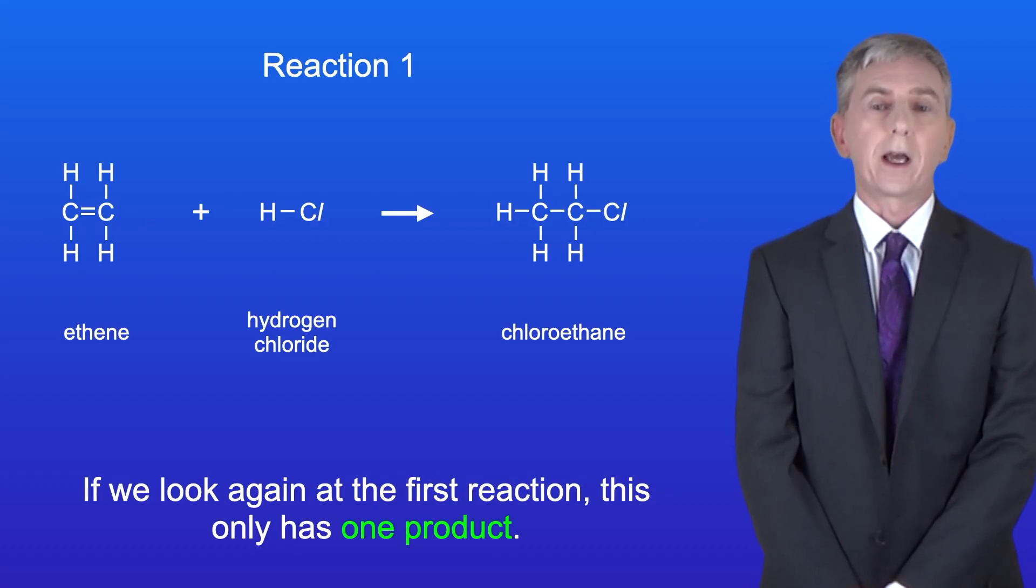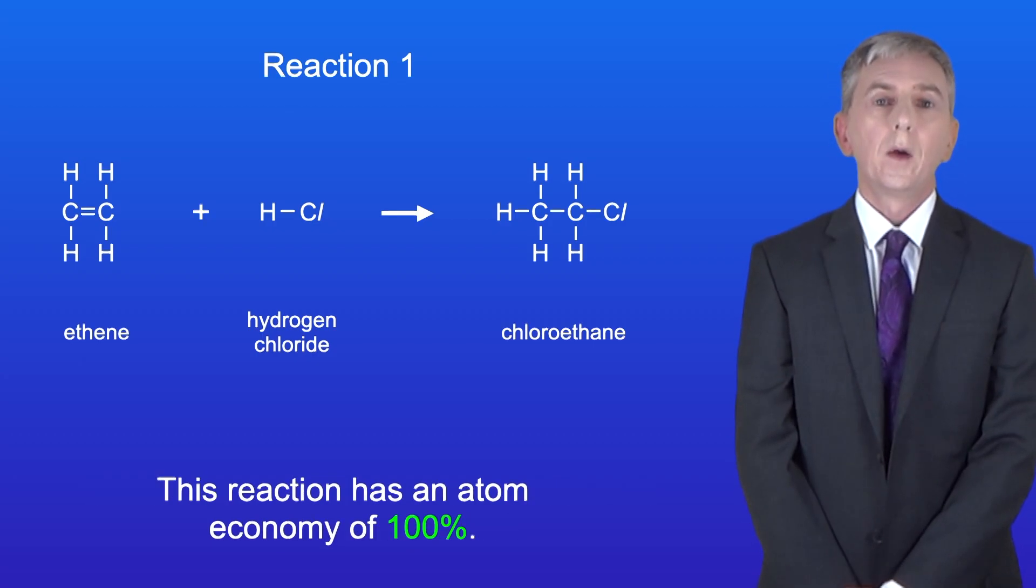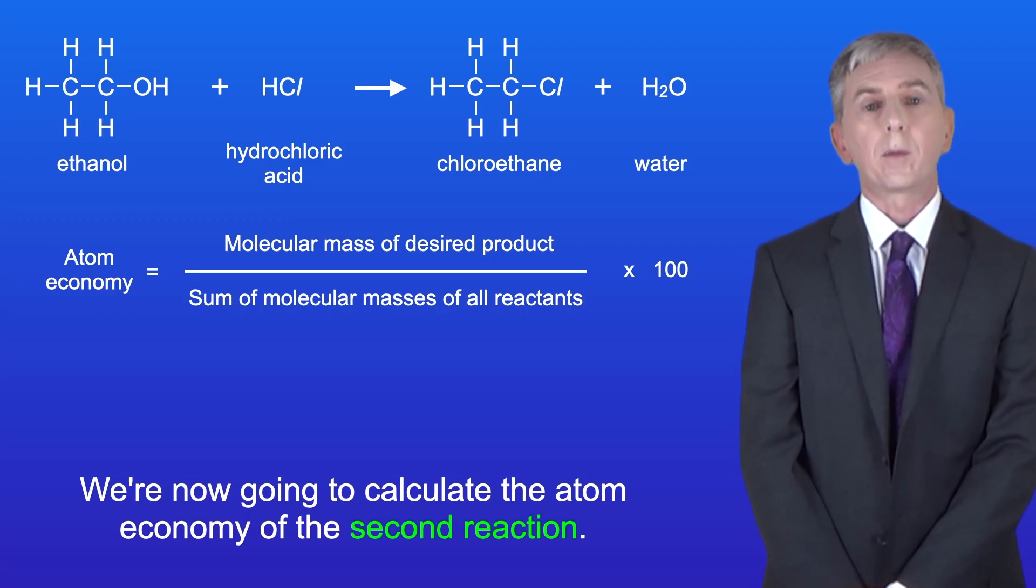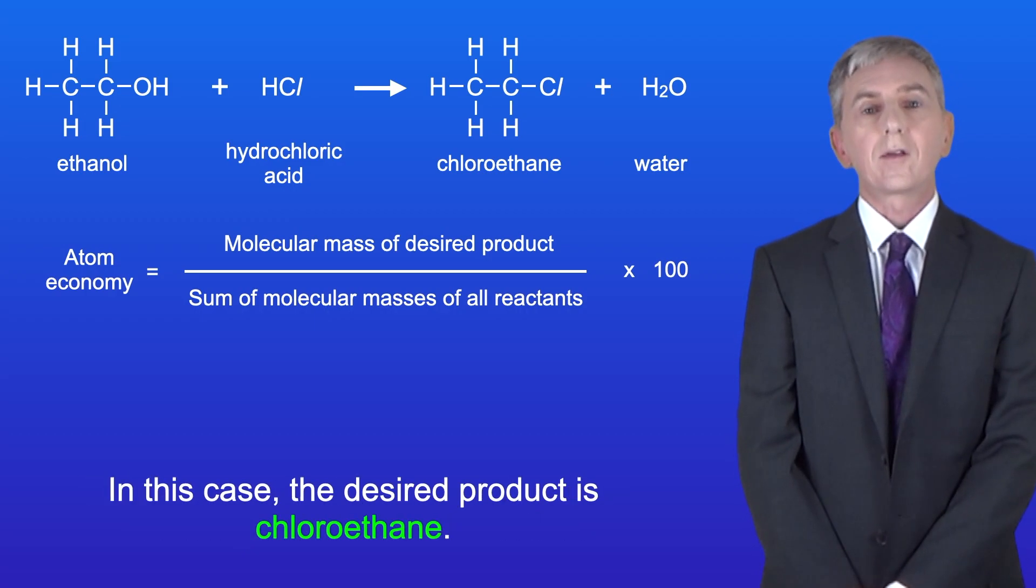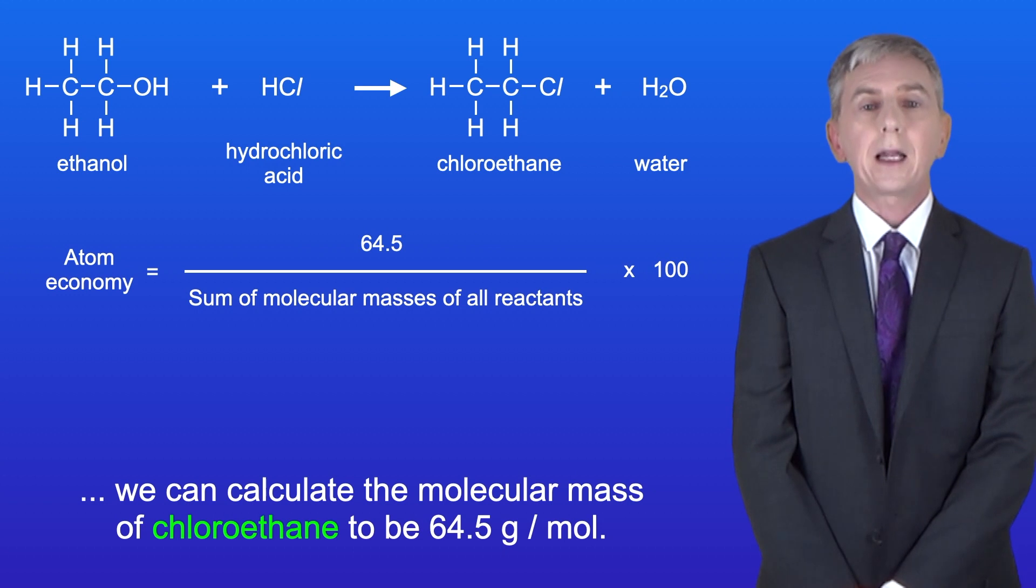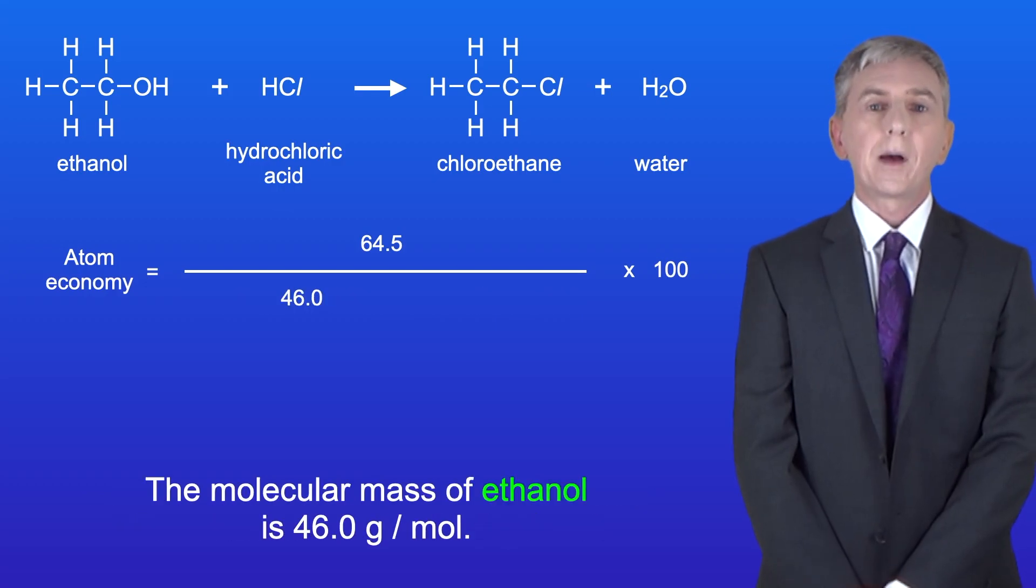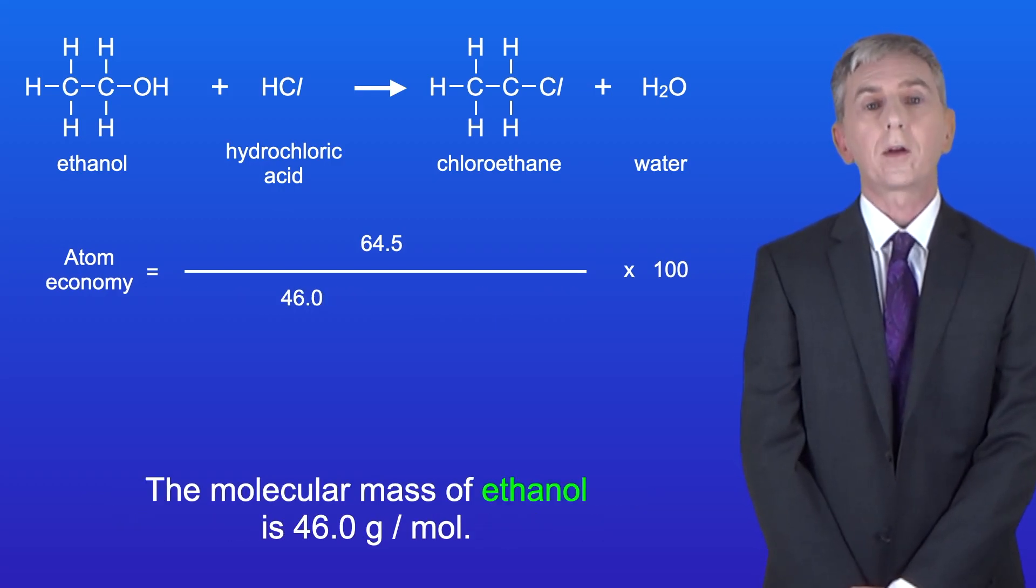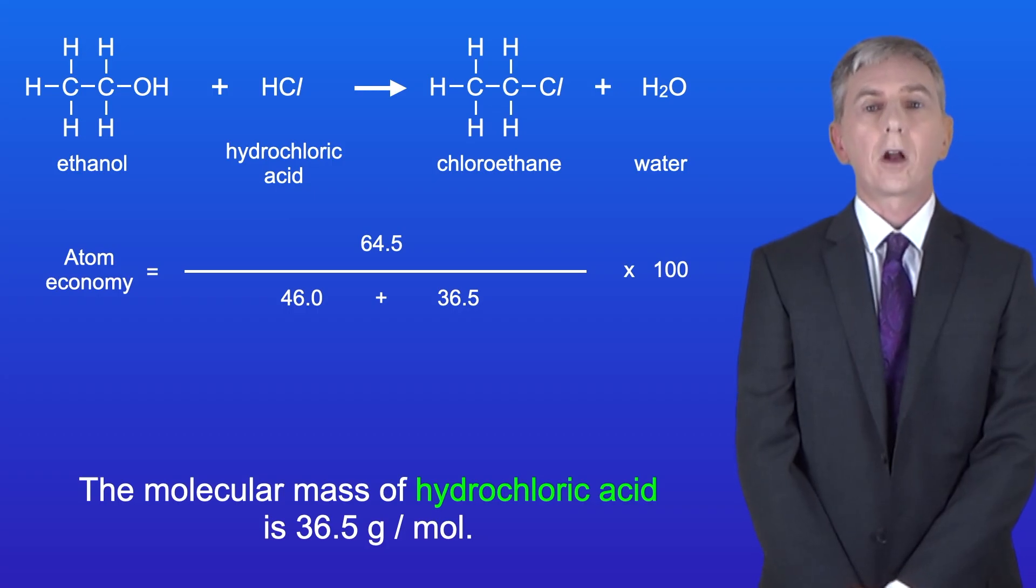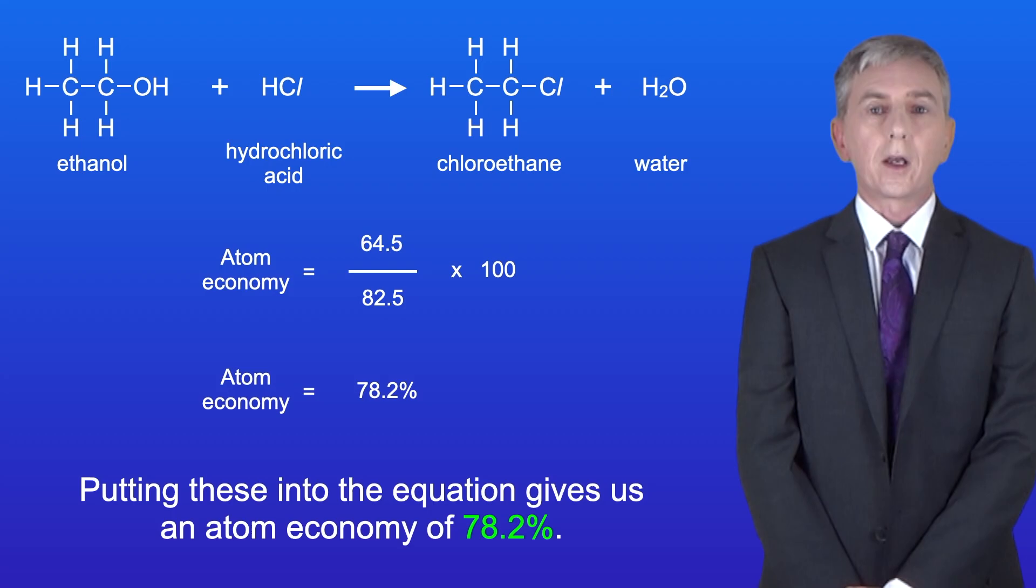Okay if we look again at the first reaction this only has one product so this reaction has an atom economy of 100 percent. We're now going to calculate the atom economy of the second reaction. In this case the desired product is chloroethane. Using the relative atomic masses from the periodic table we can calculate the molecular mass of chloroethane to be 64.5 grams per mole. The molecular mass of ethanol is 46.0 grams per mole and the molecular mass of hydrochloric acid is 36.5 grams per mole. Adding these together gives us a value of 82.5 grams per mole. Putting these into the equation gives us an atom economy of 78.2 percent.